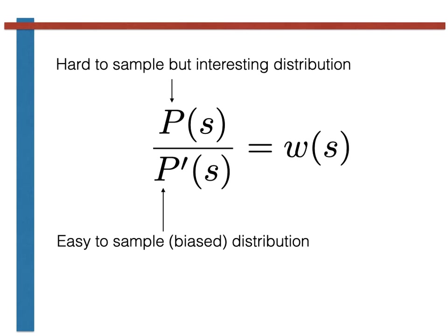The reason why this reweighting works is that you can calculate the unnormalized probabilities p of s and p prime of s in this expression. From these two quantities you then calculate a weight for the configuration, the w of s here.